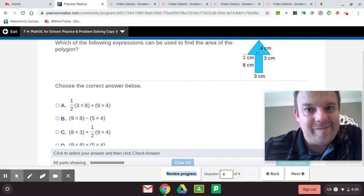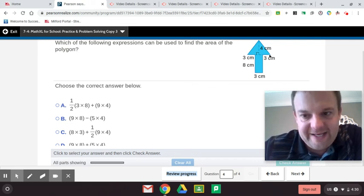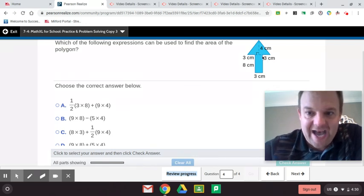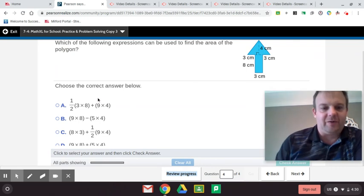Now the area of this triangle, area of a triangle is one half base times height or base times height divided by two. So the base of this is from here to here is three, from here to here is three, and from here to here is three. Three plus three plus three is nine. So now we do nine times four divided by two, nine times four divided by two or one half nine times four. So let's see down here guys, which one would work.